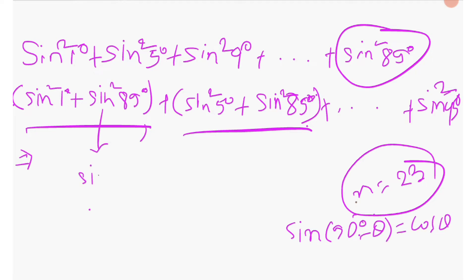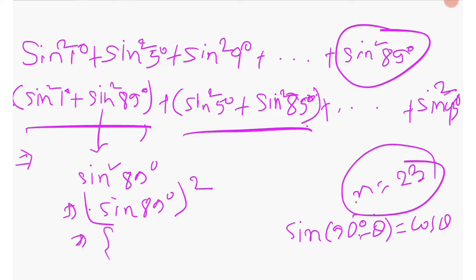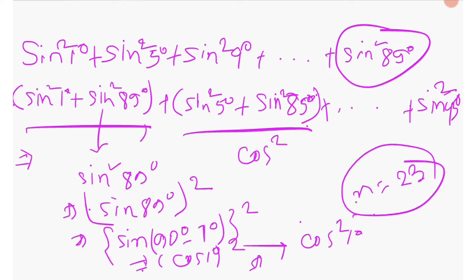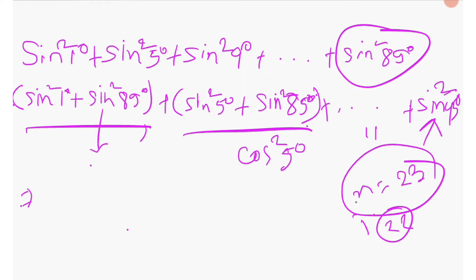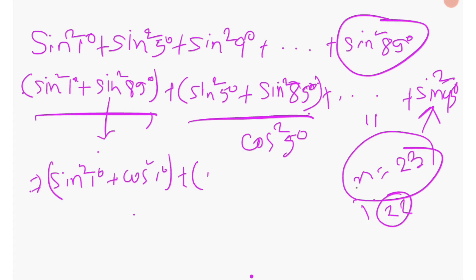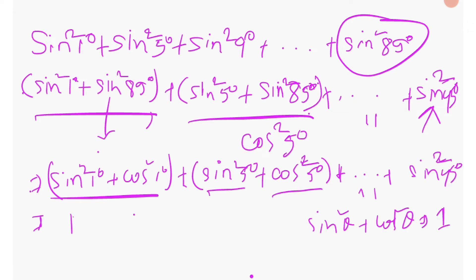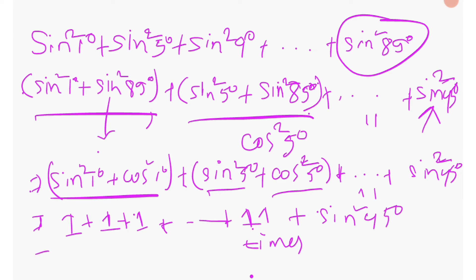We can write sin square 89 degree as sin(90 minus 1) degree whole squared. Since sin(90 minus theta) equals cos theta, this becomes cos square 1 degree. Similarly, sin square 85 degree becomes cos square 5 degree. So our expression becomes (sin square 1 degree plus cos square 1 degree) plus (sin square 5 degree plus cos square 5 degree), repeated 11 times, plus sin square 45 degree. Each pair equals 1 by the Pythagorean identity.